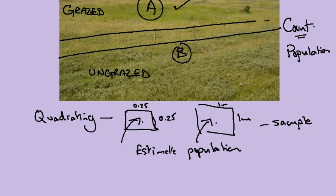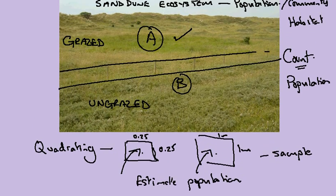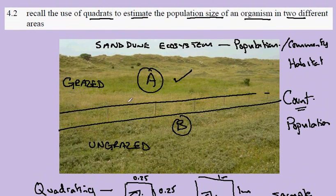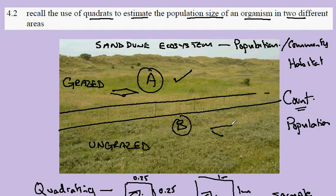More details in section 4.3. Quadrats are a method of sampling different locations so that populations can be compared in the two different locations.